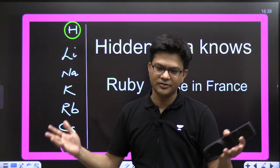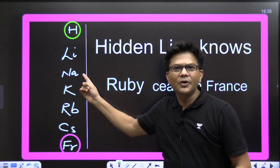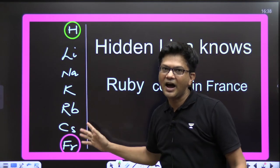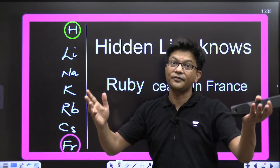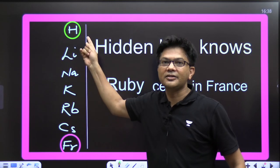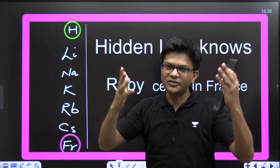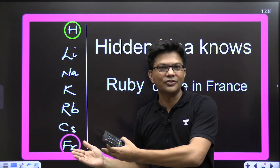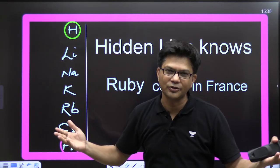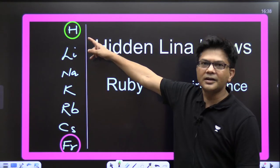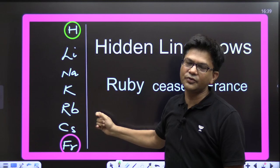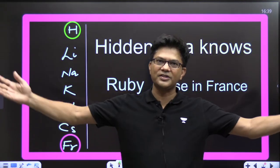Hidden Lena knows, Hidden Lena knows, Ruby sees in France — Ruby is the friend of Lena. Everyone say: Hidden — why is hydrogen circled? Because hydrogen is placed in both alkali metals and halogens; scientists are not able to decide where to keep it. So once again: Hidden Lena knows, Ruby sees in France.